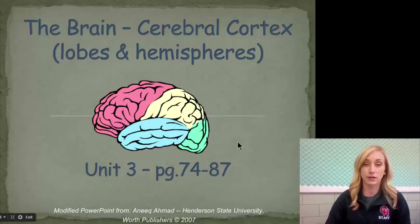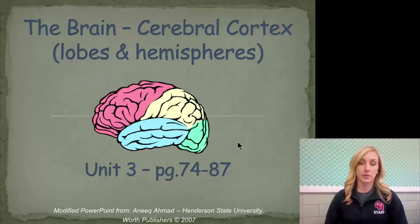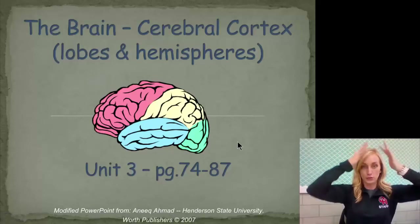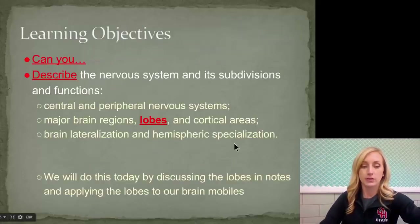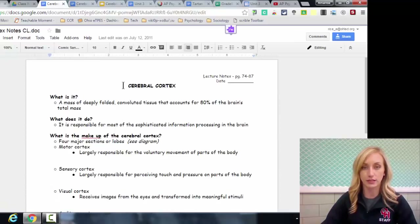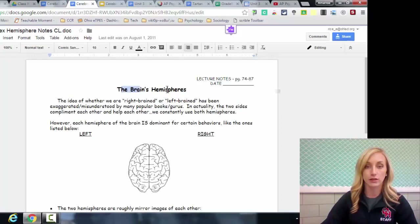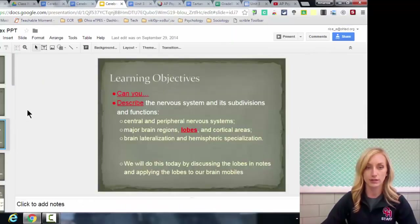We're moving on to our second brain notes and our final set of notes for unit 3. This one is about the newer brain, the cerebral cortex with the lobes and the hemispheres. Make sure you're on the notes that say the cerebral cortex at the top, and also the ones with the brain hemispheres and hemispheric specializations.